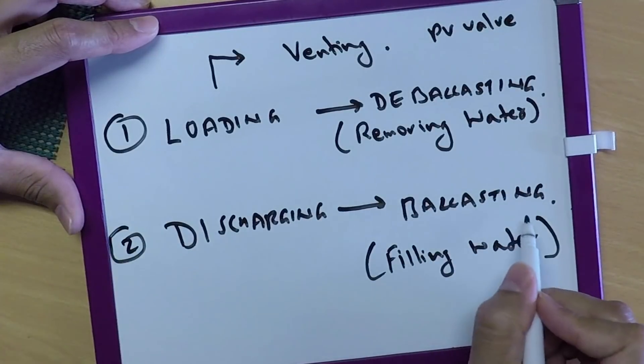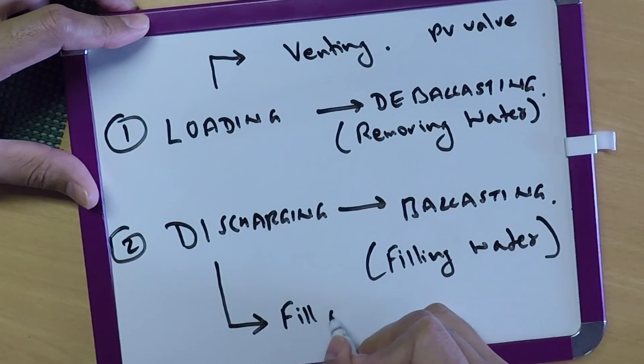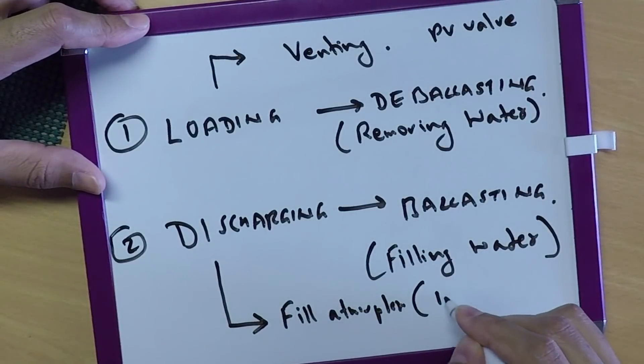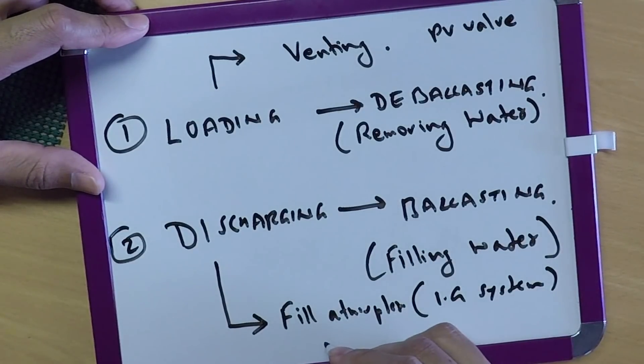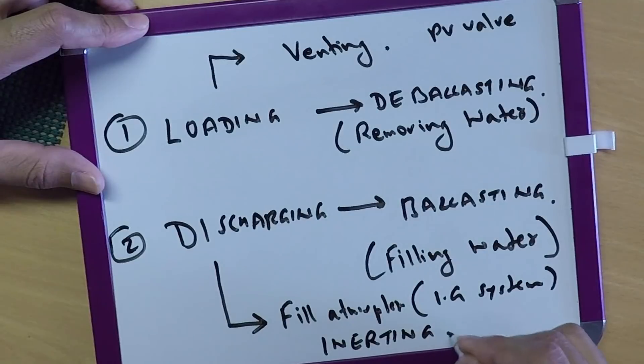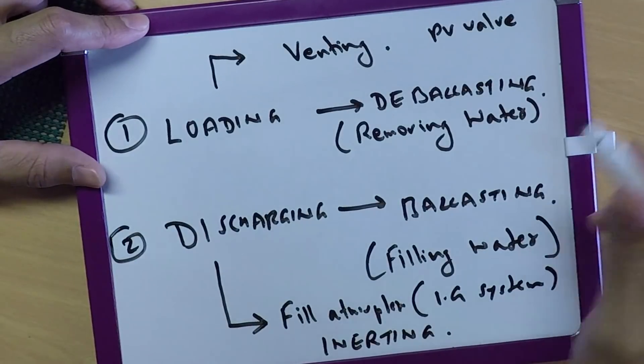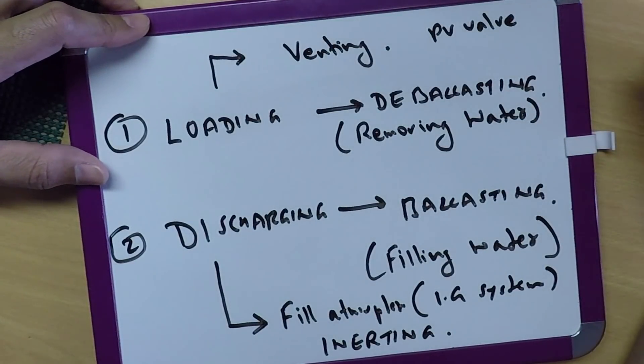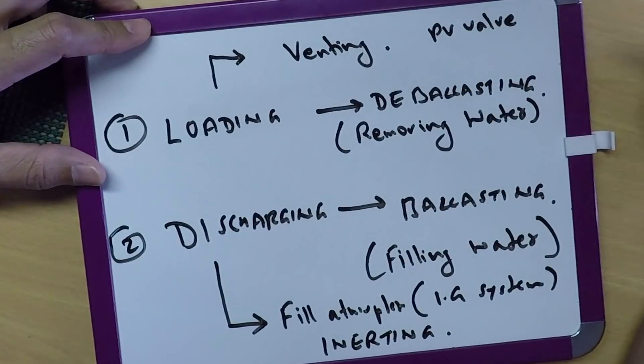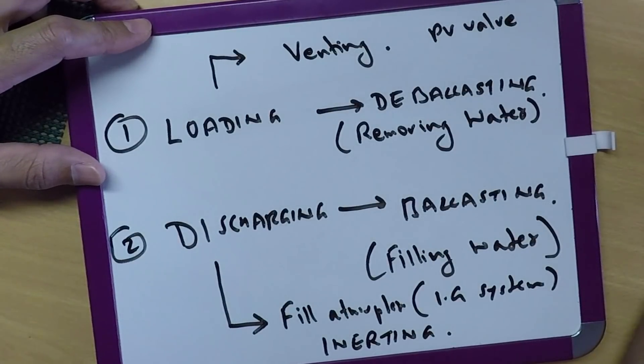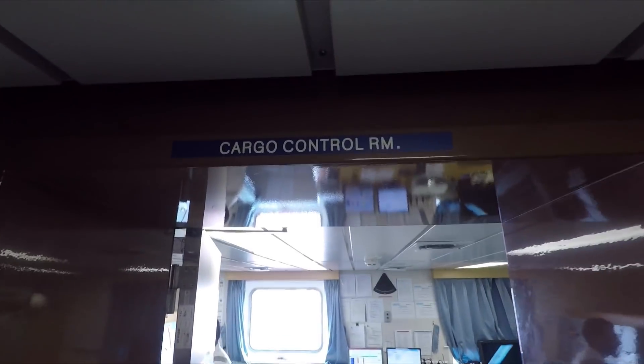Similarly, when we are doing discharging, we are emptying the tank and filling atmosphere. And that is done by IG system—inerting. Now this inert gas has an oxygen content requirement of less than eight percent, but normally we bring it to six percent, seven percent. In the control room we will see each system one by one.